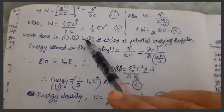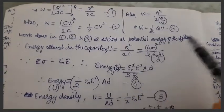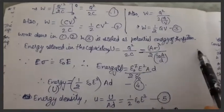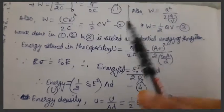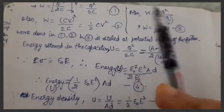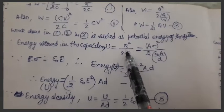In this way we see that we have three different expressions for the same work done, given in expressions 1, 2, and 3. This work done is stored as potential energy of the system. That means energy stored in the capacitor is represented by U, and its formula is q square by 2c or half c v square or half q into v.